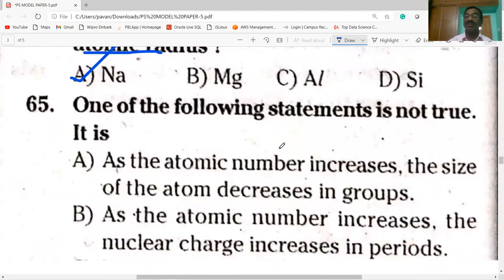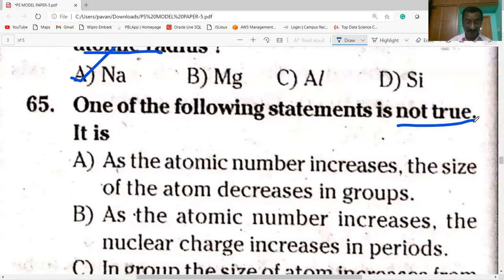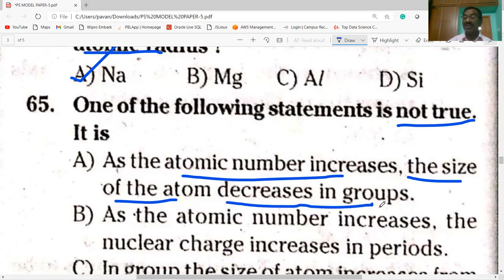Next question. One of the following statements is not true. As the atomic number increases, size of the atom decreases in the group. You know that in groups, when we go from one element to another element, the number of shells increases. The atomic size increases. It is the wrong option.